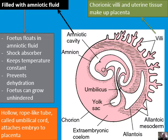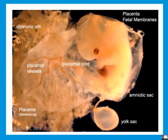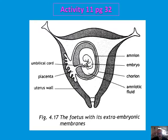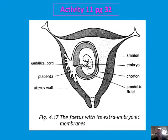The chorionic villi and the uterine tissue make up the placenta. In an early-stage image, you can see the chorionic villi at the top left, the placental vessels — arteries and veins — the developing placenta, a very reduced yolk sac, the amniotic sac surrounding the entire embryo, and the fetal membranes on the outside. Please draw this carefully, noting where the amnion, chorion, amniotic fluid, embryo, and placenta are, and how the placenta is embedded in the endometrium of the uterus.